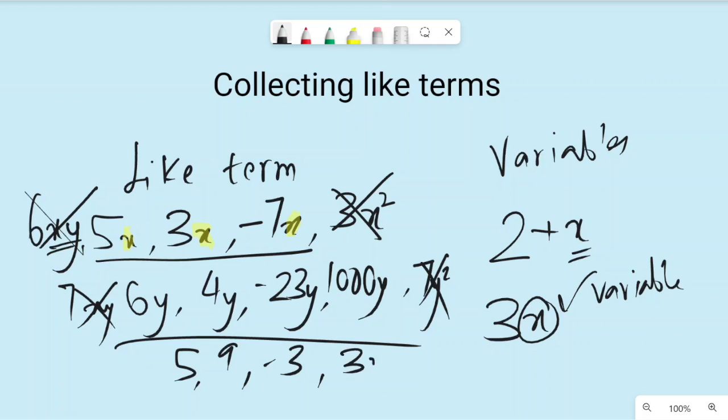And if you have a 3x with them, it's not a like term. So what is the meaning of collecting like terms?